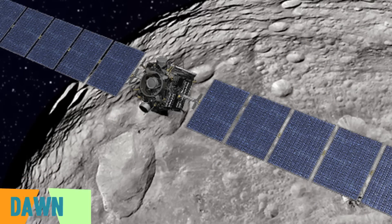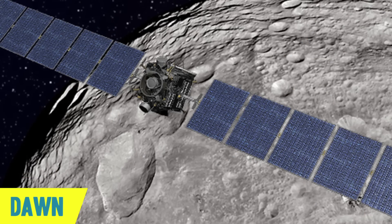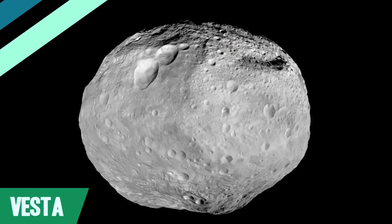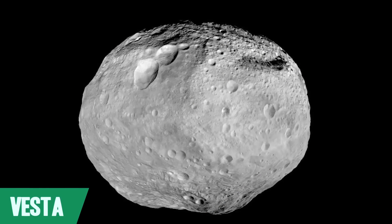Number three, Dawn, which you may have already heard of because it's already halfway through its mission of becoming the first spacecraft to orbit two different bodies. Its task is to study the two largest objects in the asteroid belt. Launched in 2007, Dawn entered orbit around its first target, the asteroid Vesta, in July of 2011, and departed in September,